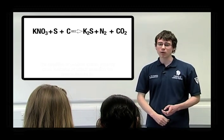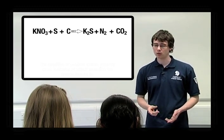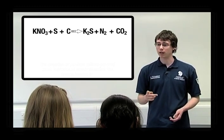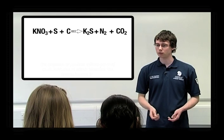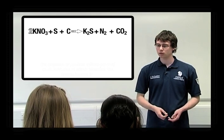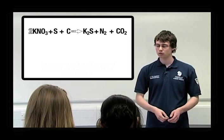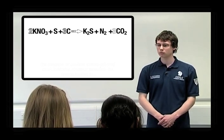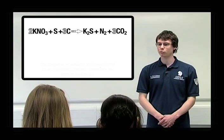We can make this a thermochemical equation. This is very simple to do. Firstly, we need to balance it. Now, Hannah, you've watched Laura's video on balancing equations. Do you think you can balance this one for us? 2 potassium nitrate plus sulphur plus 3 carbon gives potassium sulphide plus nitrogen plus 3 carbon dioxide. Brilliant.